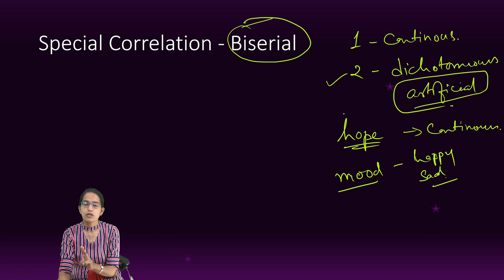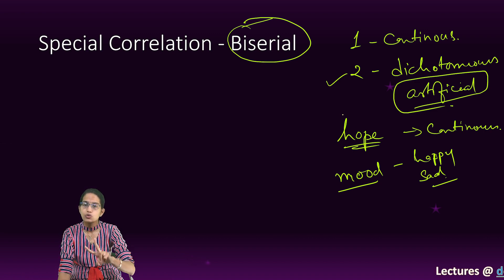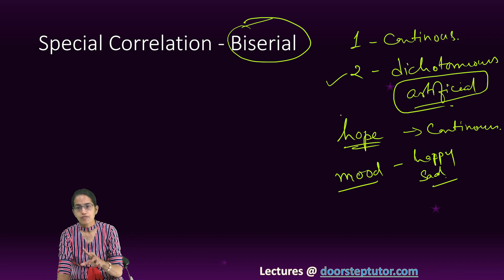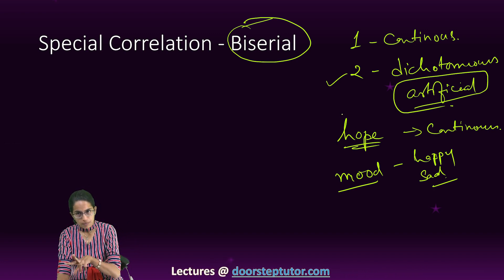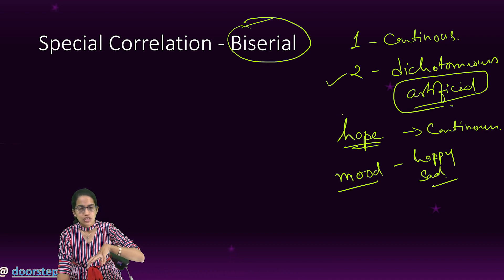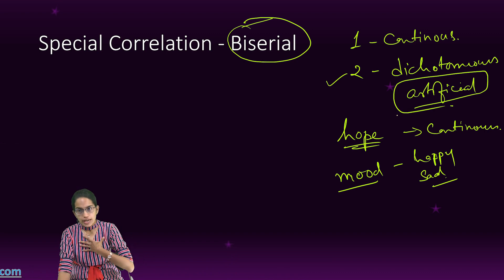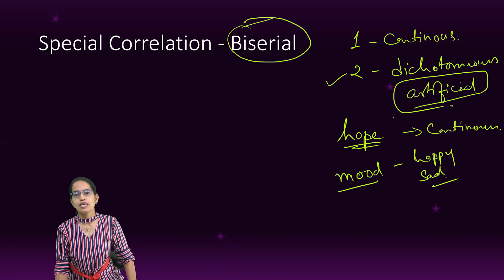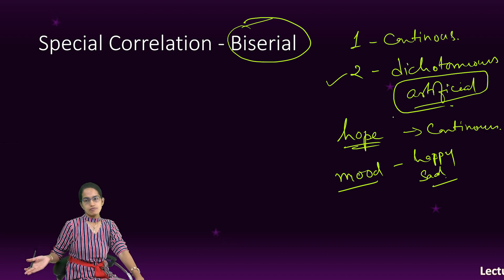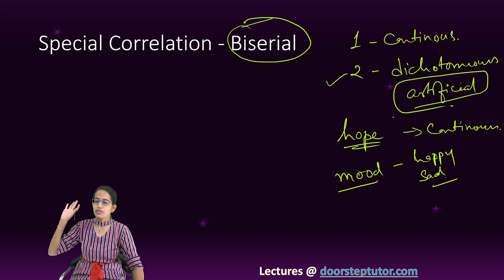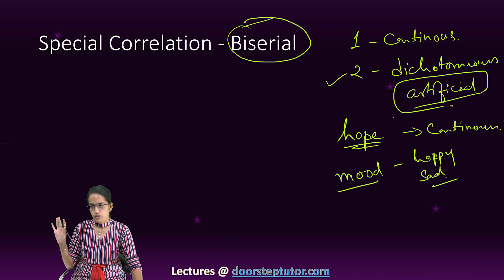Natural dichotomous variables are those which occur only in two forms naturally. For example, a person can be dead or alive; gender could be male or female — it is naturally just two forms. Artificial dichotomous means that for our study, we have divided it into two forms, but naturally speaking, there can be more than two forms in which they can occur. So in the case of biserial, we are using artificial dichotomous forms.